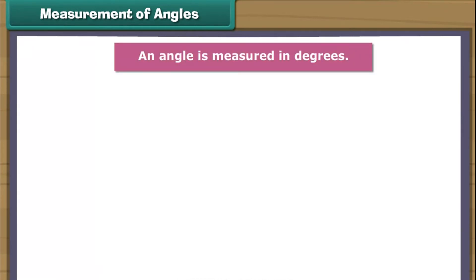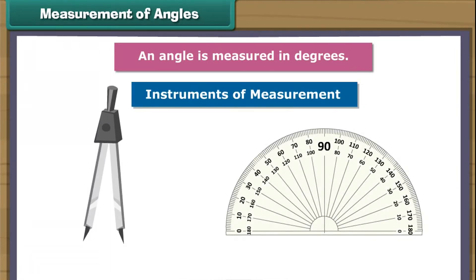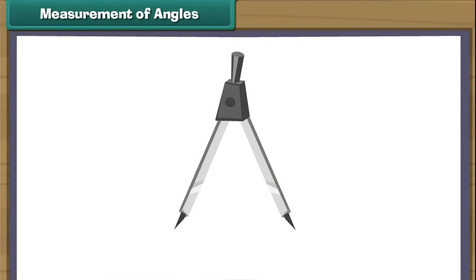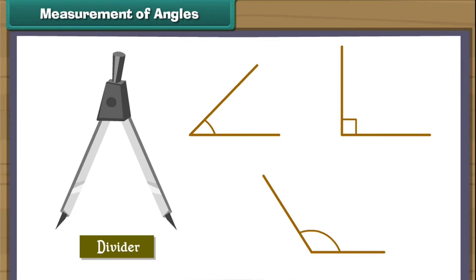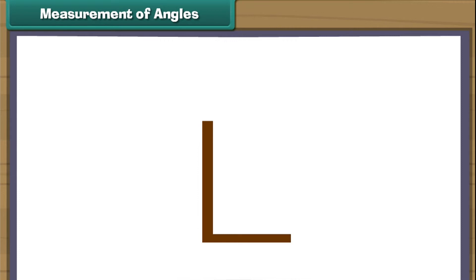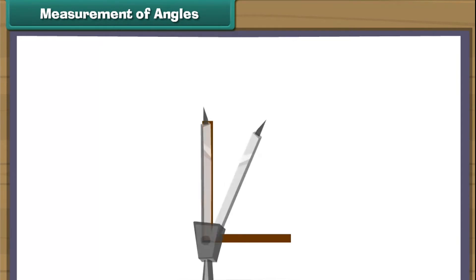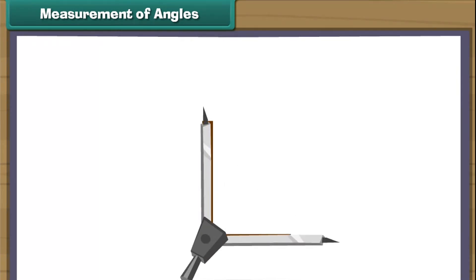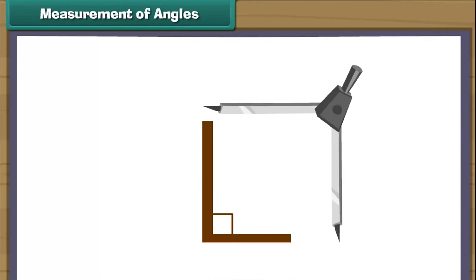Measurement of angles. An angle is measured in degrees. Let us now measure angles with two different instruments: a divider and a protractor. Write the letter L of the English alphabet. Place the divider on L and adjust it to coincide with L. Lift the divider up.